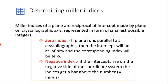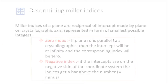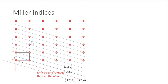Second thing jo humare paas milti hai, that is about negative index. Agar aapka intercept negative side mein aaye coordinate axis ke, toh us case mein humare paas Miller Index negative hoga. Aur negative index ko hum likhne ke liye, Miller Index jo number hai, uske upar bar lagate hain. Ab hum kuch examples dekhte hain two dimensional arrangement mein, ki kis tarah se hum Miller Index kisi plane ka nikaalenge.